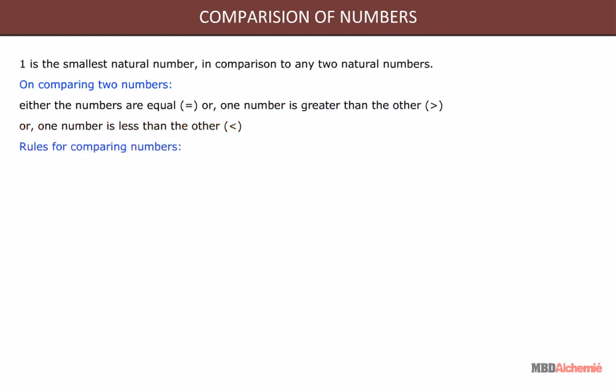Rules for comparing numbers. Rule 1: A numeral containing more digits represents a greater number.